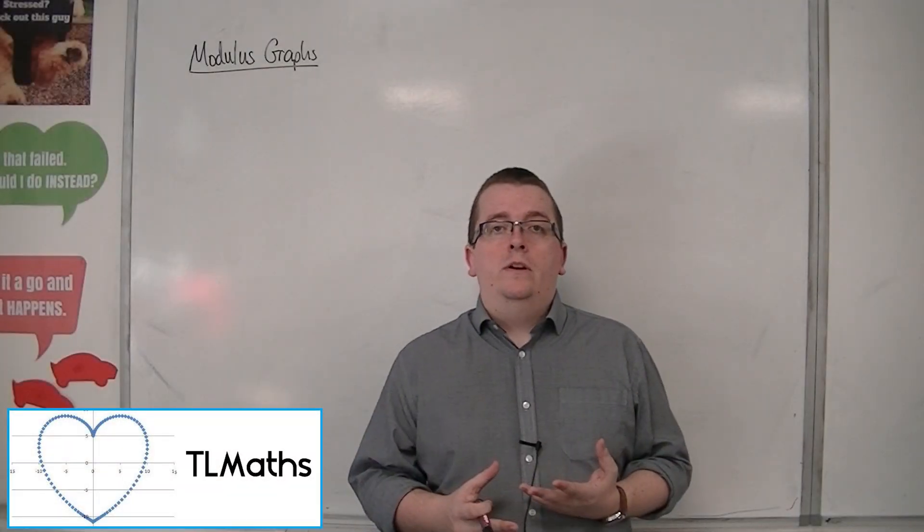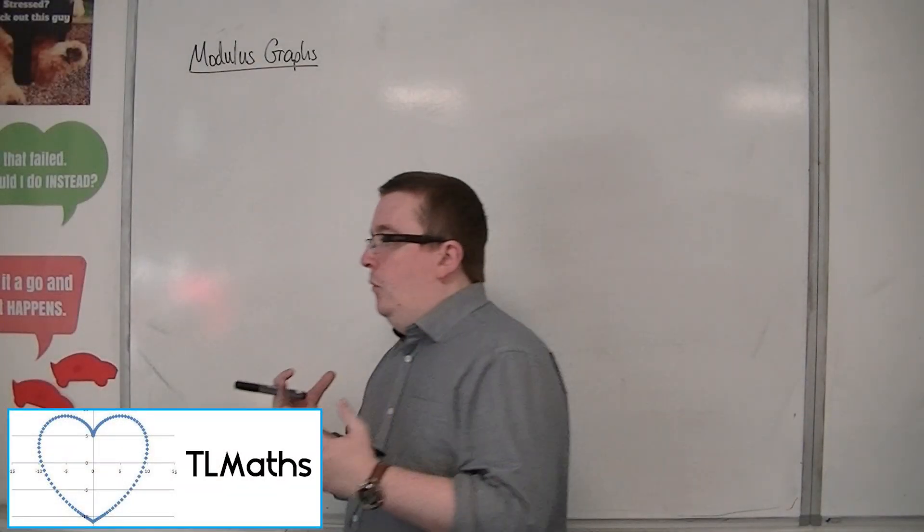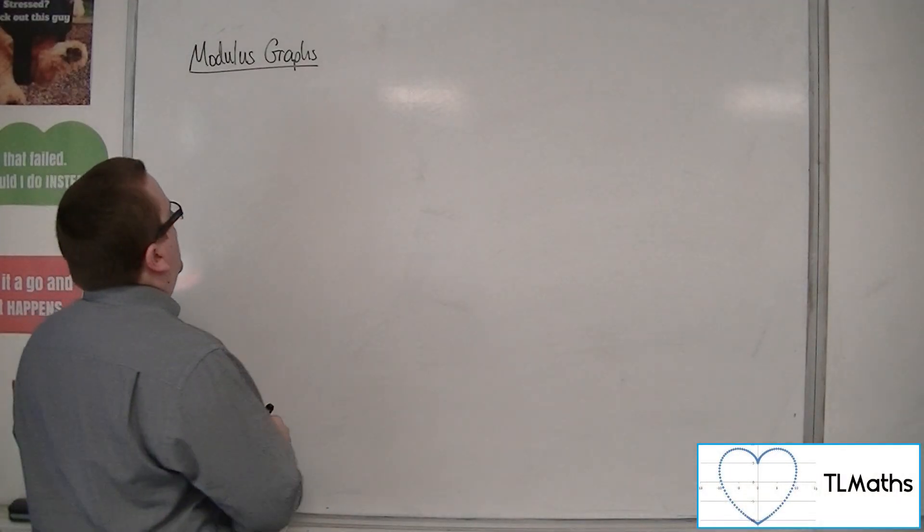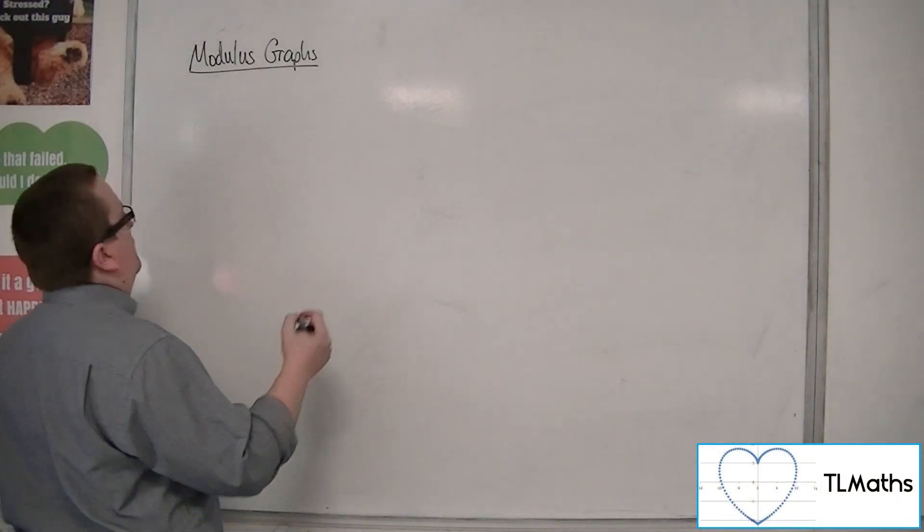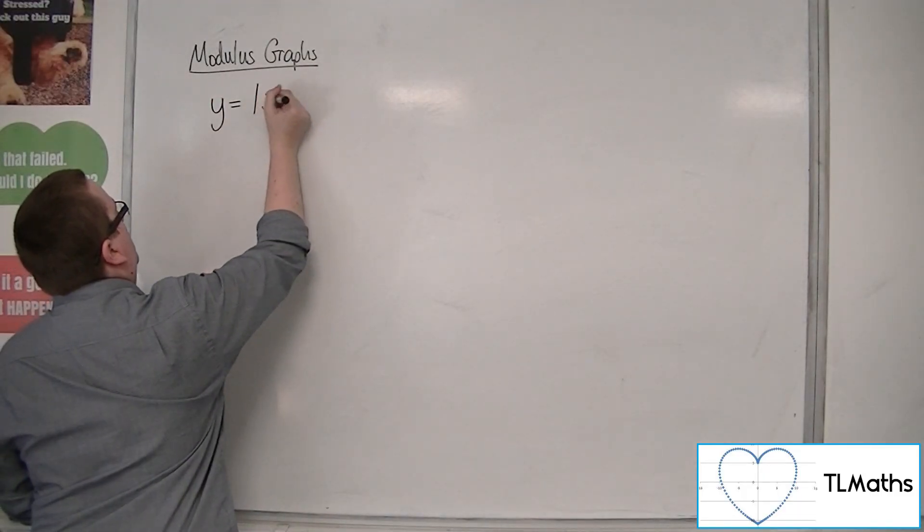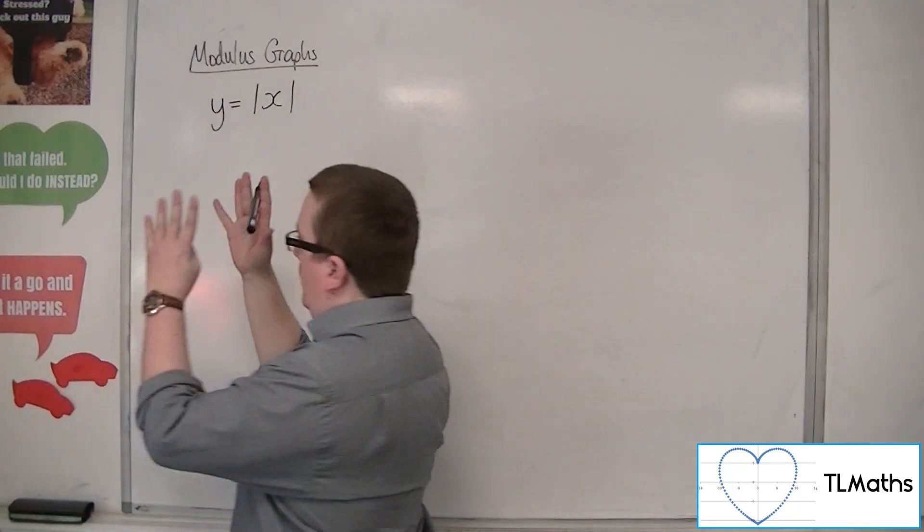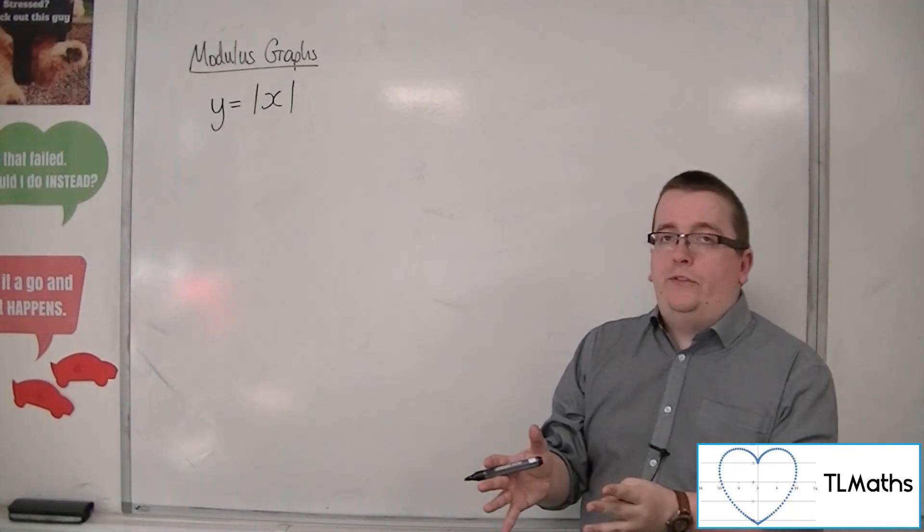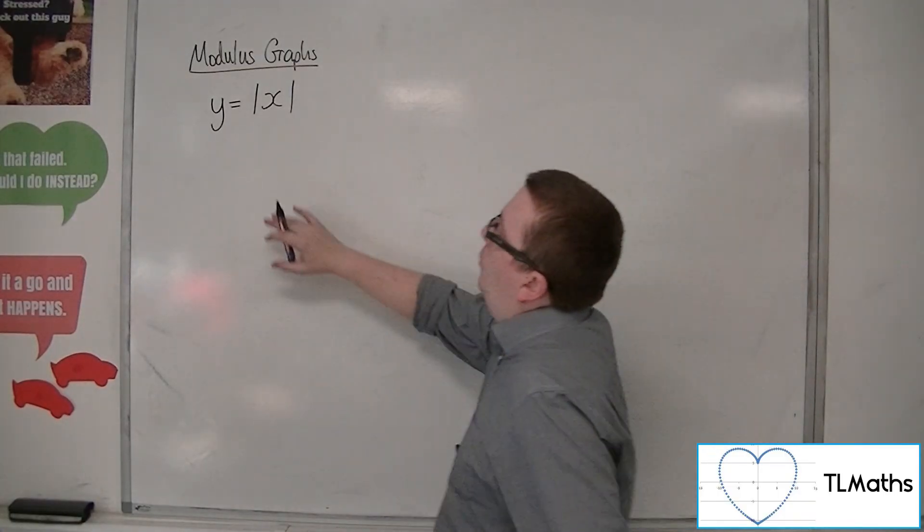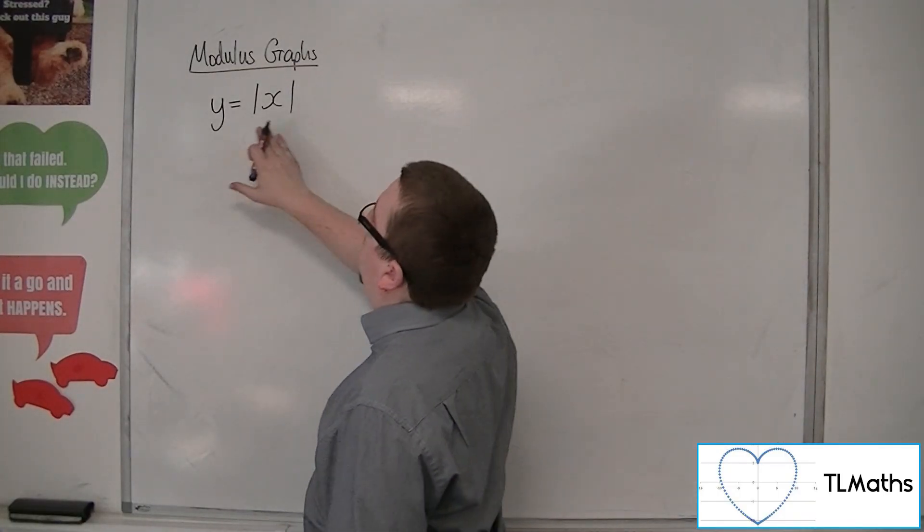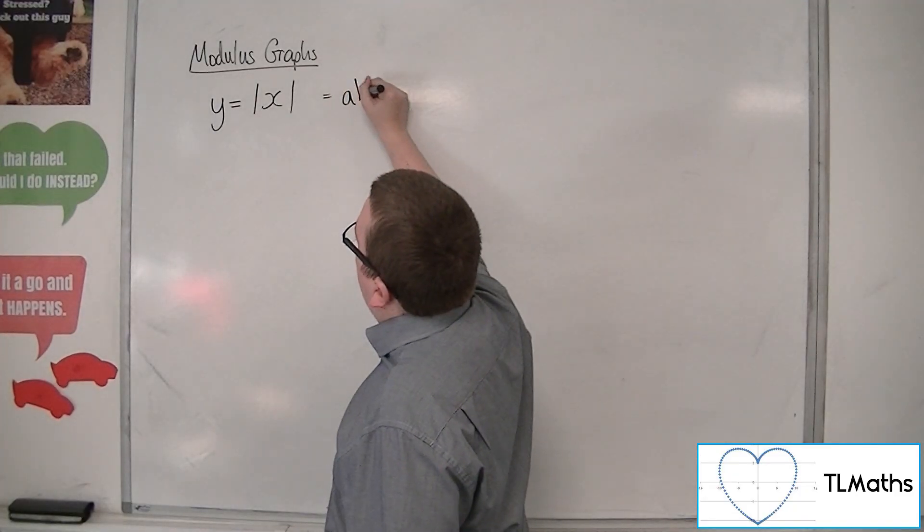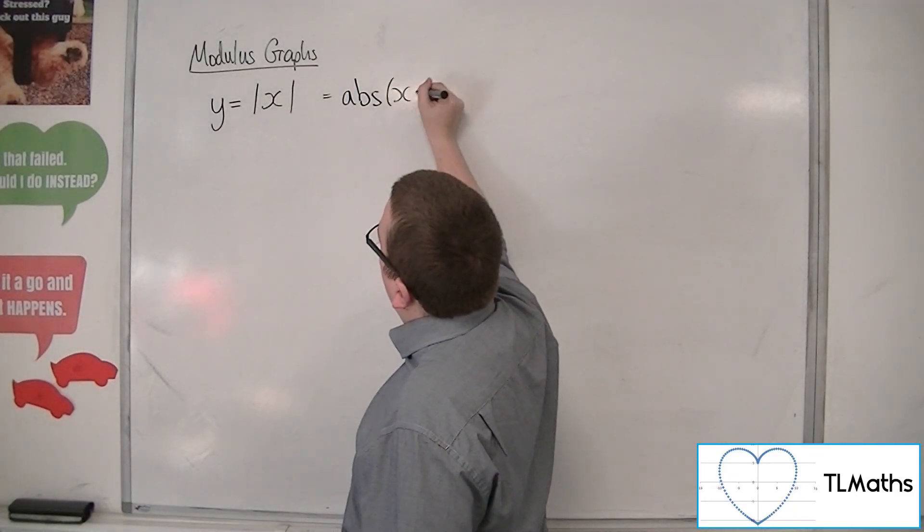The modulus function is also known as the absolute value, and what you have is a graph starting off looking like this. So we put these straight line vertical line brackets around the x, and what we would say is that y equals mod x, or the modulus of x. As I said, it is also written as the absolute value of x.